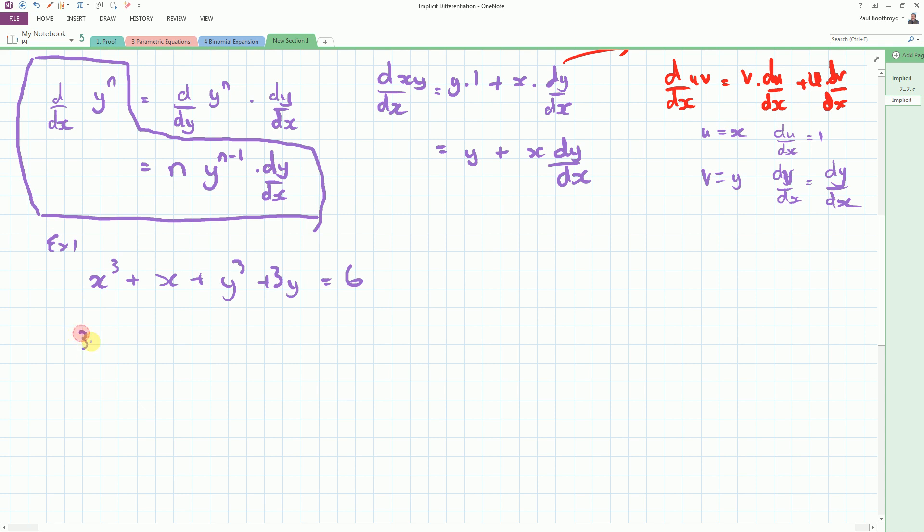When we differentiate each term we're going to get 3x squared. Differentiate the x is 1. Differentiating this y part. Differentiate it with respect to y gives me 3y squared dy dx. And again we've got to differentiate with y. We get 3 dy dx. Differentiating the constant always gives you 0.